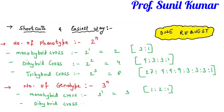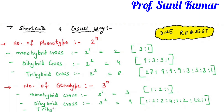For dihybrid, 3 squared gives 9 genotypes: the ratio 1:2:1:2:4:2:1:2:1. For a trihybrid cross it is 3 raised to 3, giving 27 genotypes. Can you write out the full genotype ratios for a trihybrid cross? Write it in the comment section — I will be happy to know.